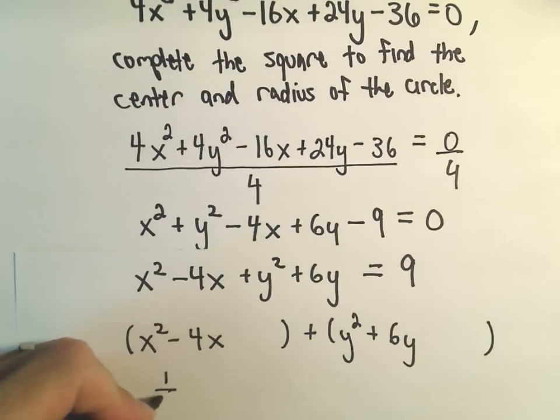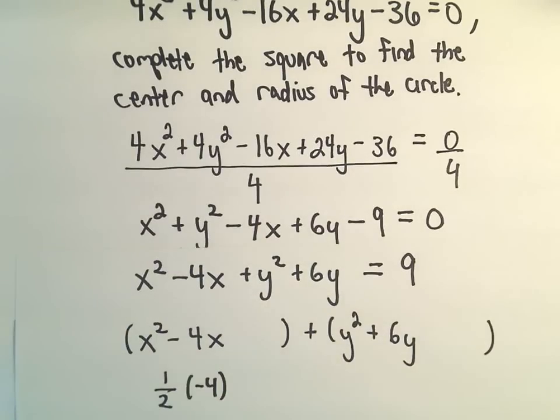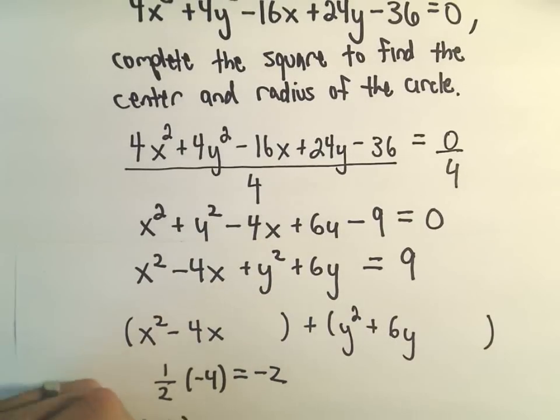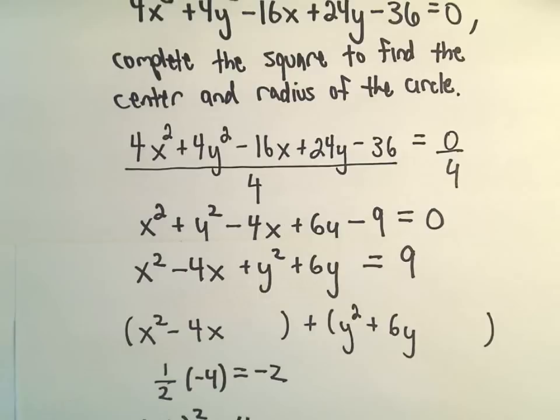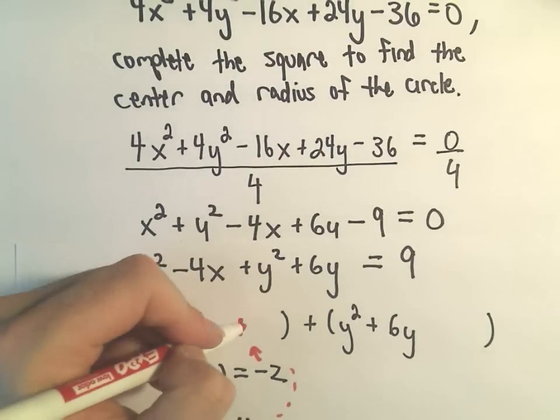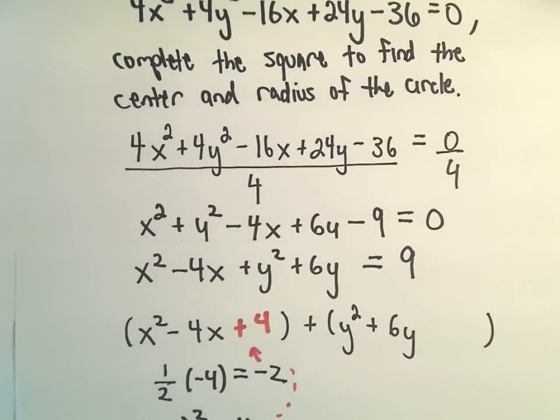So again, completing the square, it says we take one-half of the coefficient on the linear term. So one-half of negative 4 in this case will be negative 2. We then take negative 2 and square it, which will give us positive 4. And this number is the number that we just kind of magically throw inside the parentheses. So plus 4.